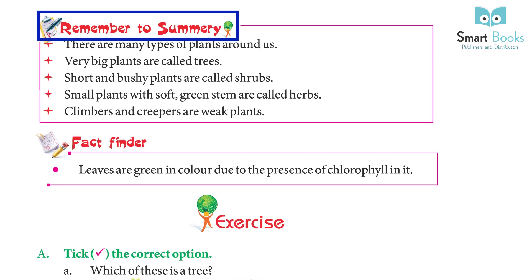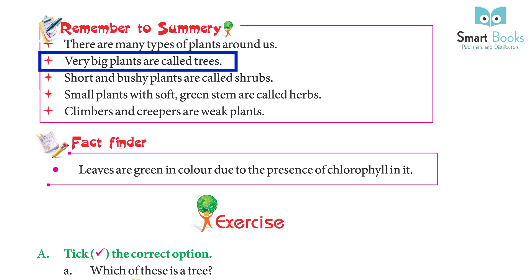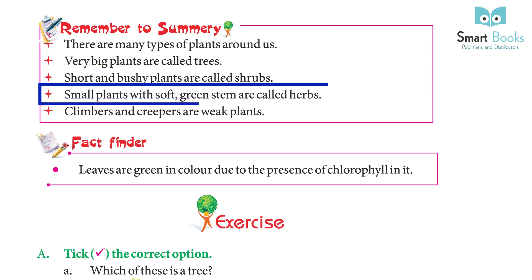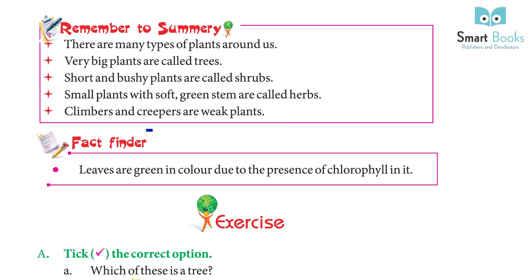I am green in color and make food for the plant. I have many leaves. I contain seeds. Summary: there are many types of plants around us. Very big plants are called trees. Short and bushy plants are called shrubs.